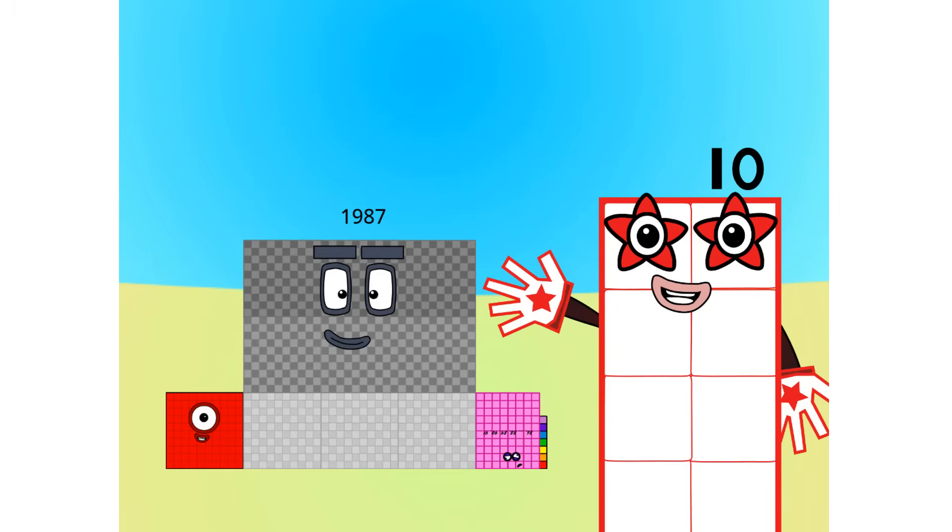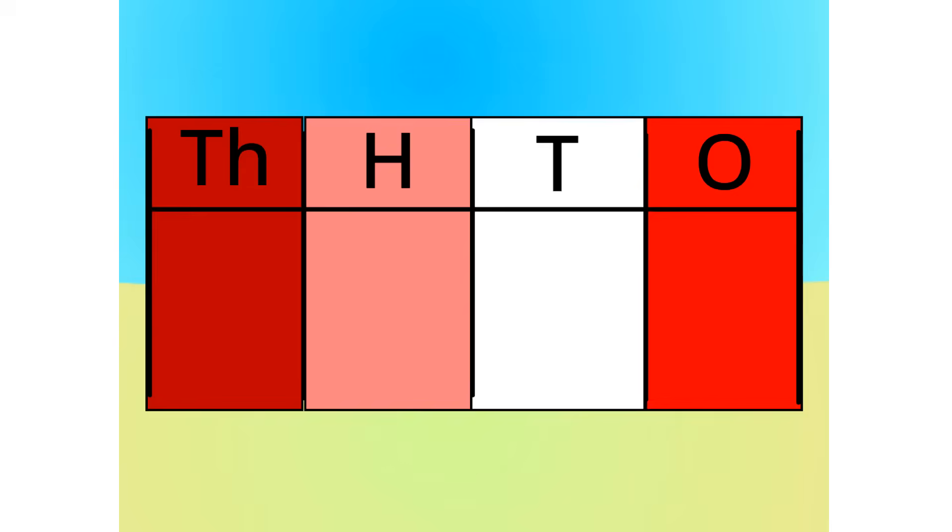This number is made up of 1,000, 9 hundreds, 8 tens, 7 ones. See? Let's see this in block form, shall we? As you can see, this number is 1,900, 8 tens, 7 ones. Let me carry on with the first method. Do you notice anything with this table? Correct. The number multiplies by 10 each time it goes left one column. Because it multiplies by 10 each time, we call this system base 10.